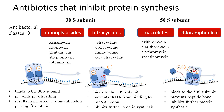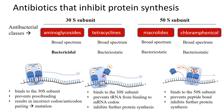Macrolides and chloramphenicol, on the other hand, bind to the larger of the two subunits — the 50S subunit — and will prevent the formation of peptide bonds between the growing amino acid chain and the incoming amino acid. Like tetracyclines, both macrolides and chloramphenicols stop protein synthesis. Where aminoglycosides cause mutations to the growing peptides, the effect is bactericidal, while the other three classes stop further proteins from being made — an effect that is bacteriostatic.